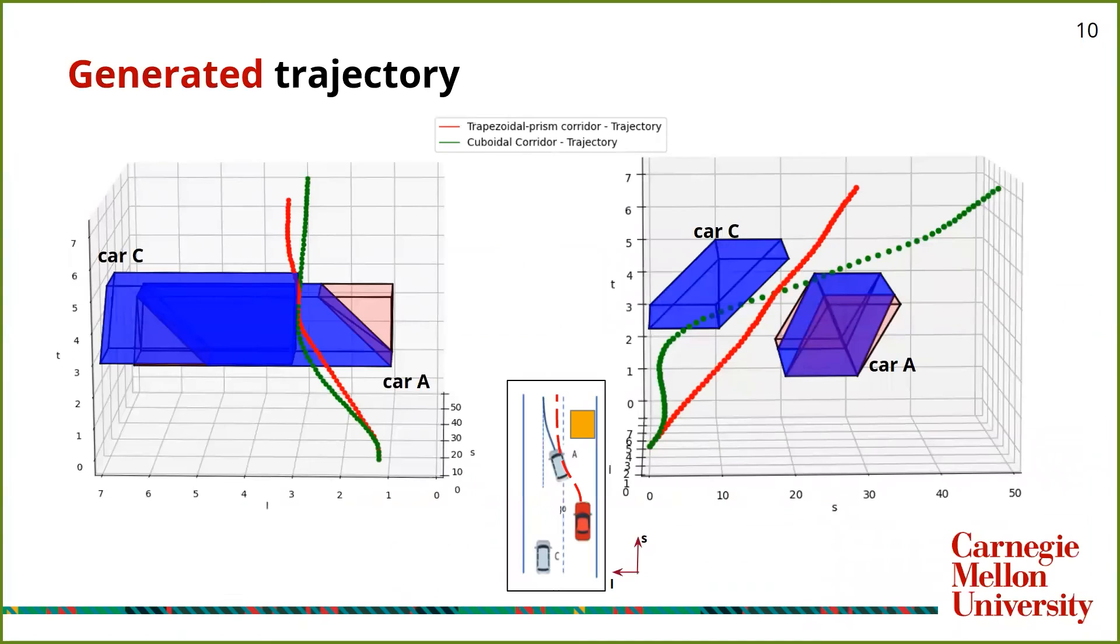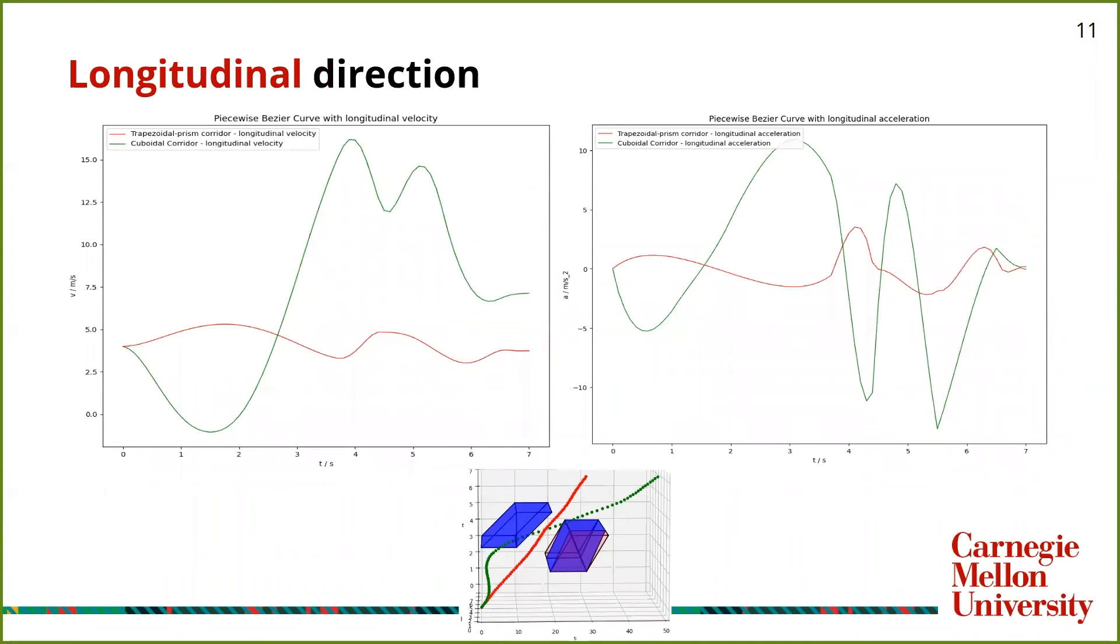We generate trajectories using two approaches: our approach, which is the trapezoidal prism-shaped corridors, and the cuboidal corridor approach, which is the baseline. We see from these plots that the red curves, which are generated using our approach, are much smoother than the green curves. We can see from these acceleration and velocity plots in longitudinal directions that our approach generates much smoother plots for accelerations. What this means is that our approach generates a comfort optimal trajectory, and we can validate that enlarging the search space generates a better trajectory.